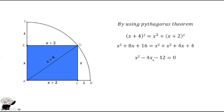We factorize it to get (x - 6)(x + 2) = 0, so x is 6 or -2. Since we don't have negative distance, x is equal to 6.